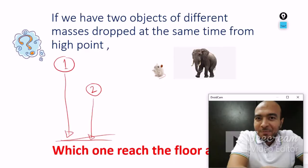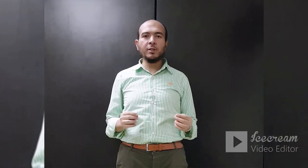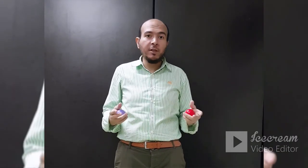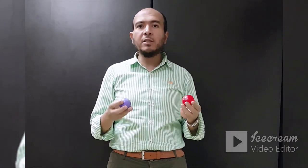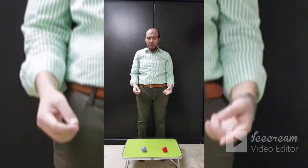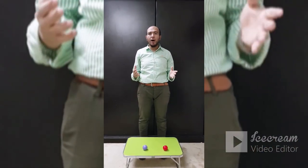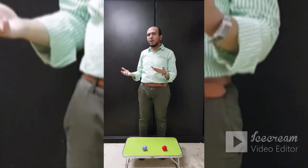Assalamu alaikum, welcome everyone. Today I will show a simple experiment about free fall for objects of different materials. I have two objects made of the same material — heavy plastic. I will drop both at the same time from different heights. The red one is higher than the purple one. Three, two, one — both of them reach the ground at the same moment. Why? Let's use another material to find out.